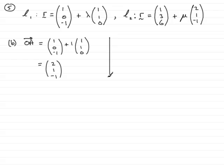Similarly, we've got to get the position vector of B, so that's O to B. And O to B is on L2, and it's when mu equals 2. So we just need to put 2 in for mu here, so O to B would be (1, 3, 6) plus 2 times (2, 1, -1).